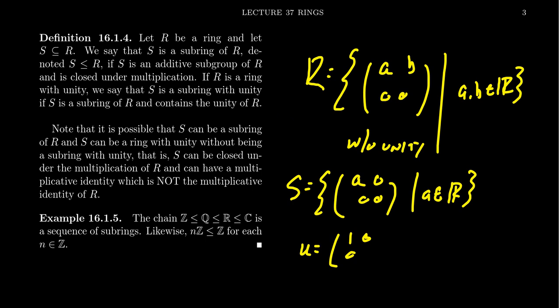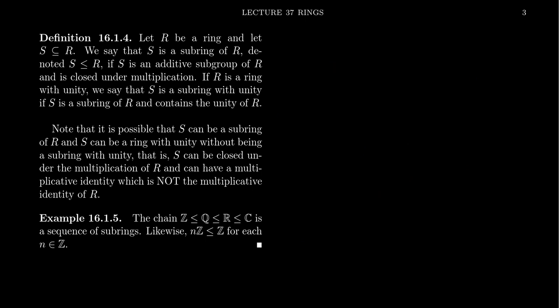What's even more bizarre is that you can have a subring of a ring with unity, and the subring is a ring with unity, but because it's a different unity, that doesn't count as a subring with unity. For example, consider the ring R cross R.